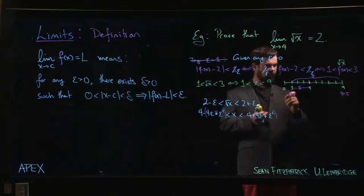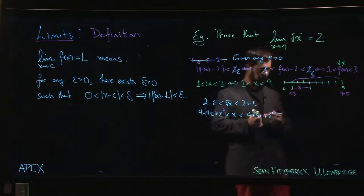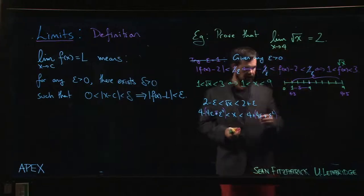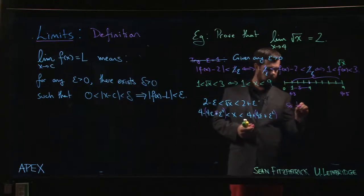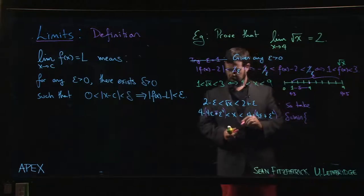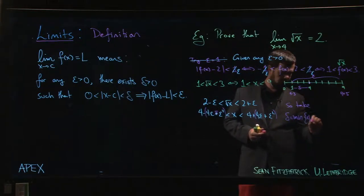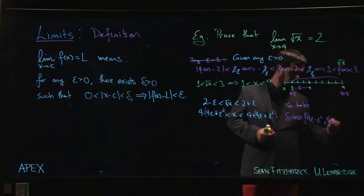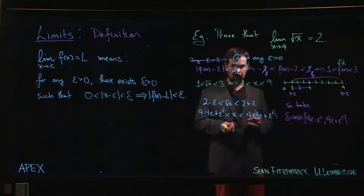I'm looking at those numbers, giving the distance from 4 on either side, and I'm saying whichever one of those is smaller, that's the one that I'll take. And so that means that I should take my delta to be the lesser of 4 epsilon minus epsilon squared and 4 epsilon plus epsilon squared. I should take one of those.